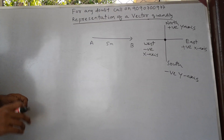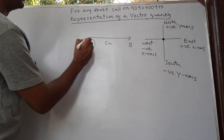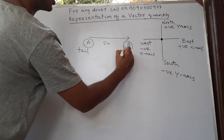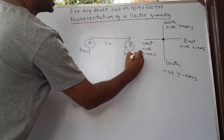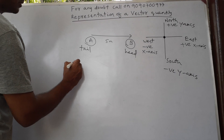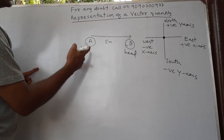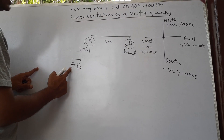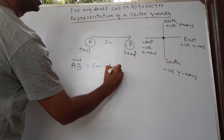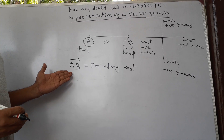Now I am going to represent this vector. This point is called the tail — every vector quantity consists of a tail — and this point is called the head, where the arrow is. I am representing this vector as AB: A is the tail part, B is the head part, so I write AB, which is 5 meters along east.